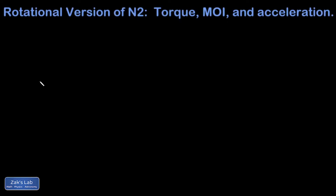In this video, we're trying to come up with a rotational analog to Newton's second law. So if you remember Newton's second law, which I like to call N2, it says that F net equals Ma. So what's the equivalent of this when we talk about rotational dynamics?